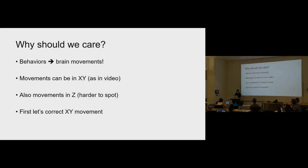So why should we care? Behaviors cause brain movements — that's a big problem. Some movements are easy to spot, like movements in XY. But if the brain is moving up and down, it's not very easy to spot, and that can cause a lot of confounds in your recordings. We'll go through correcting XY movement first, and then talk about ways to correct for Z movement, primarily online Z correction while you're doing imaging.